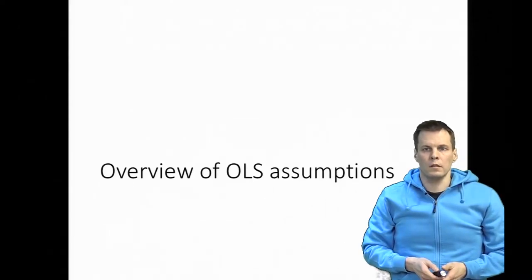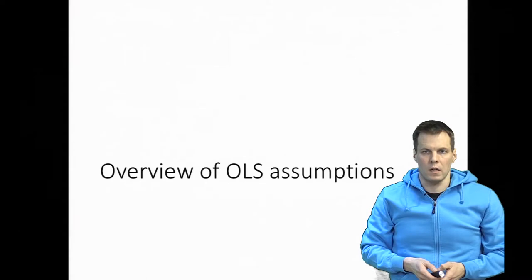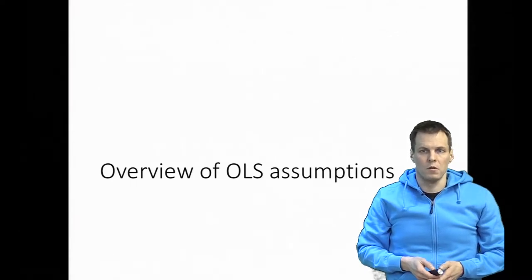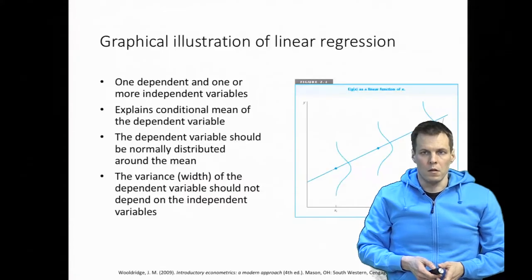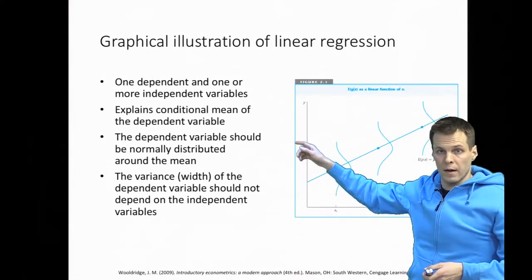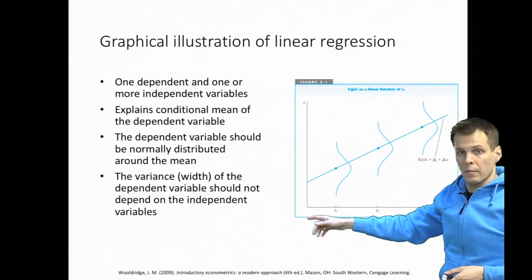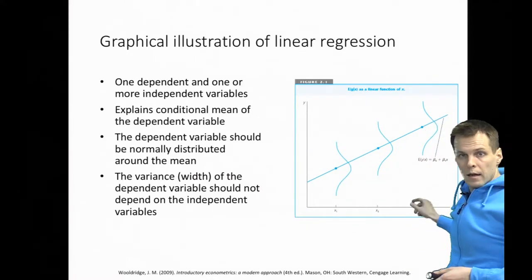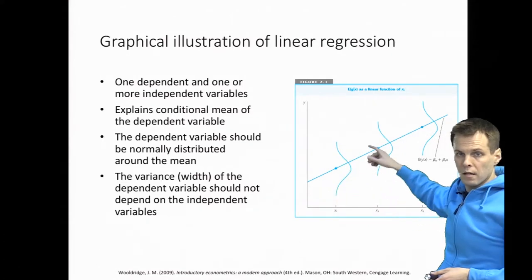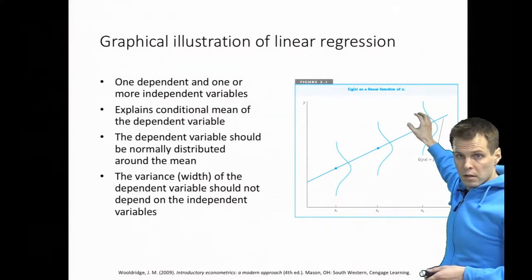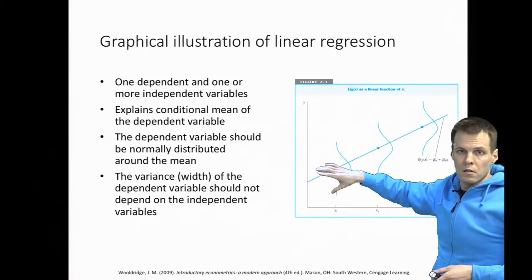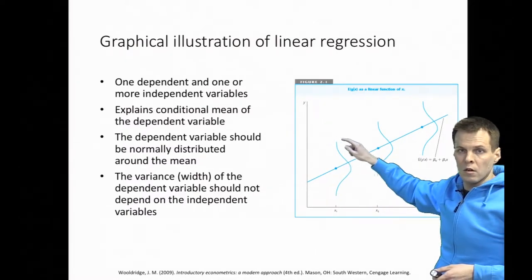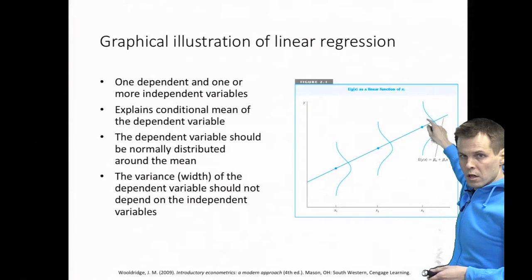This video introduces regression analysis assumptions — specifically the assumptions that the least squares estimation principle requires. The idea of least squares estimation is that we have one dependent variable y and one independent variable x, and we draw a line through the middle of the scatterplot. Regression analysis assumes that observations are equally spread out around this line, so the dispersion is the same at every point along it.